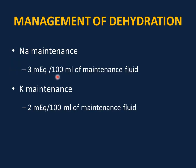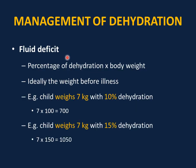Sodium maintenance is 3 mEq per 100 ml of maintenance IV fluid. For 1000 ml of maintenance, that is 30 mEq of sodium. Potassium maintenance is 2 mEq per 100 ml, so for 1000 ml, add 20 mEq of potassium. For fluid deficit: percentage of dehydration times body weight. Use pre-illness weight ideally. Example: a 7 kg child with 10% dehydration — deficit = 7 × 100 = 700 ml. A 7 kg child with 15% dehydration — deficit = 7 × 150 = 1050 ml.